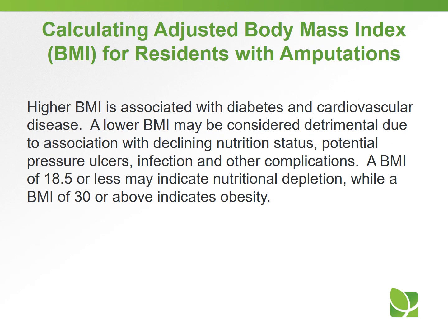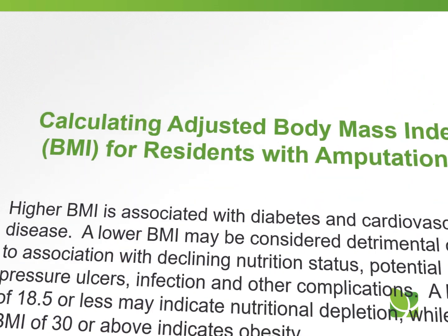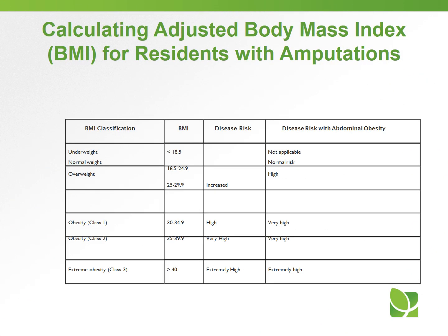A higher BMI is associated with diabetes and cardiovascular disease. A lower BMI may be considered detrimental due to association with declining nutritional status, potential pressure ulcers, infection, or other complications. A BMI of 18.5 or less may indicate nutritional depletion, while a BMI of 30 or above indicates obesity. The following table indicates BMI, disease risk, and disease risk with abdominal obesity.